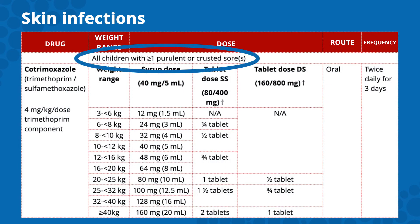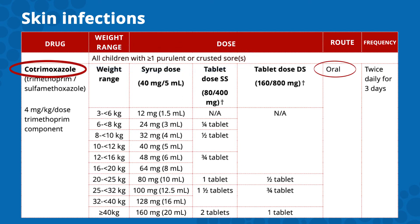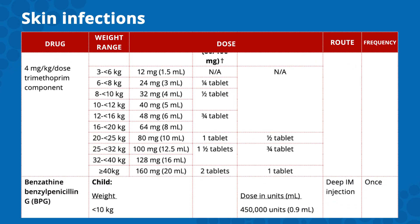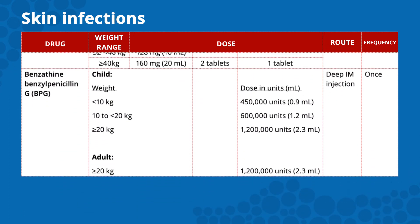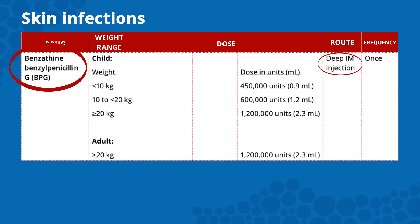Any child in a high-risk group with one or more purulent or crusted sores should be treated to prevent ARF. The recommended treatment is oral cotrimoxazole, dosage by weight, orally twice a day for three days, or one intramuscular benzathine benzylpenicillin injection.